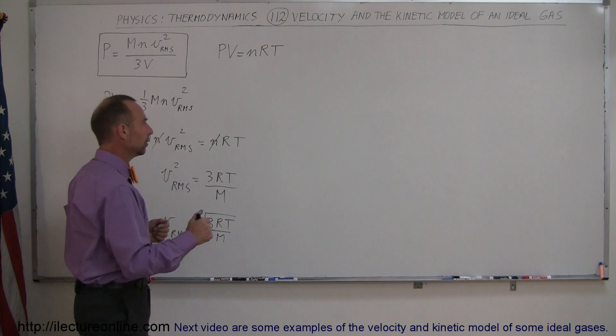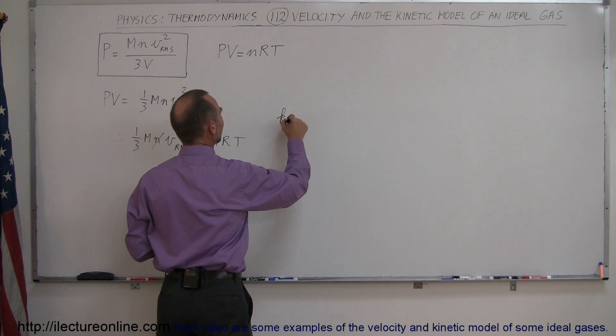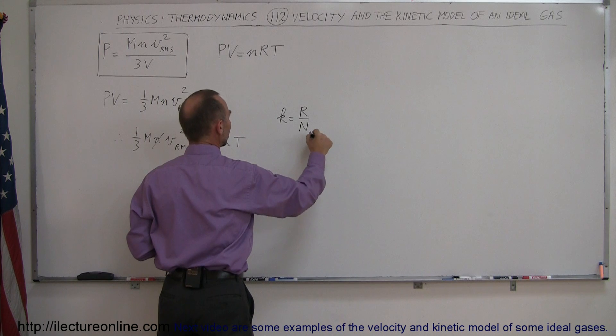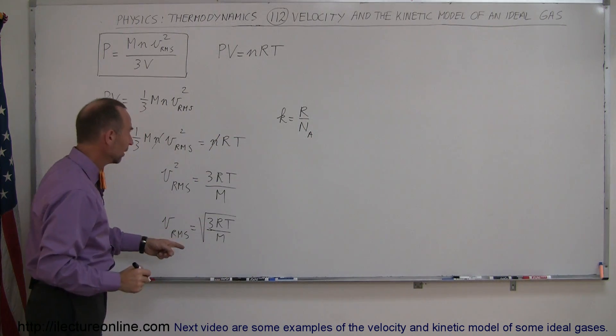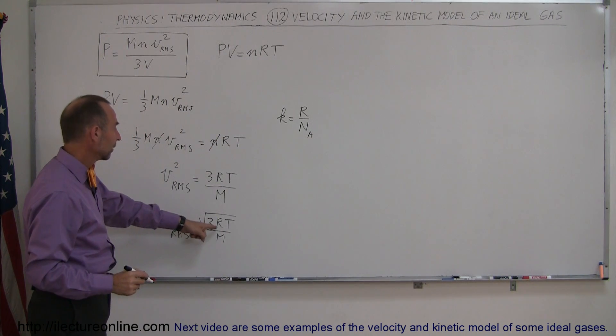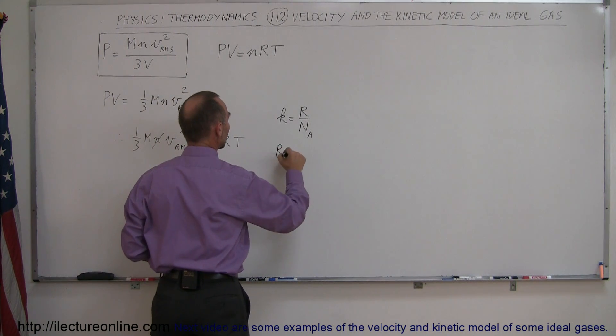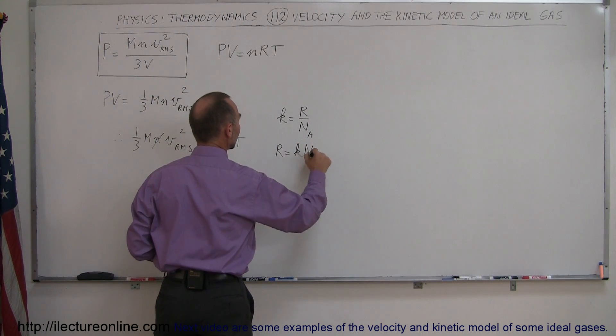Now if we remember that K is equal to R divided by Avogadro's number, we can substitute that in. We can then replace R by K times N sub A. So R can be written as K times N sub A.